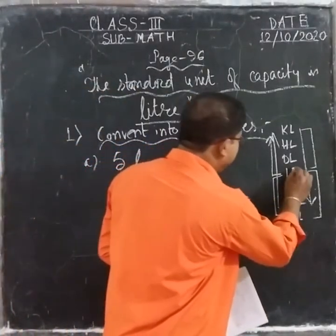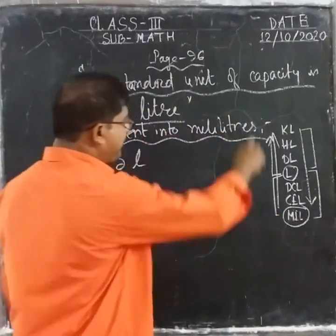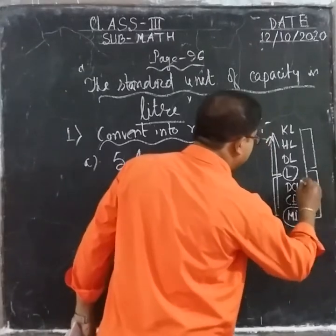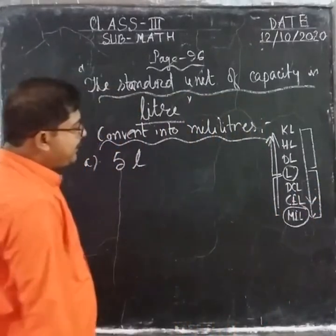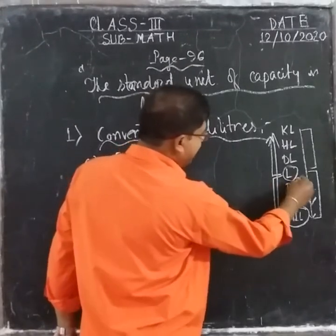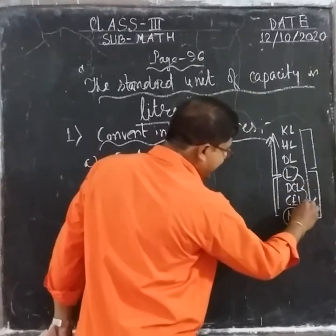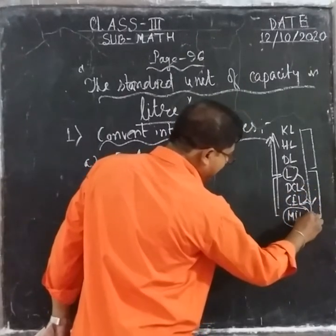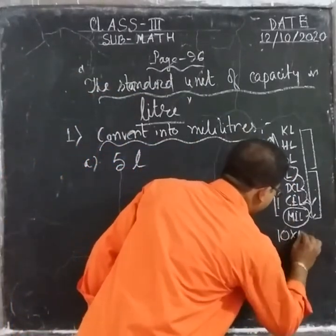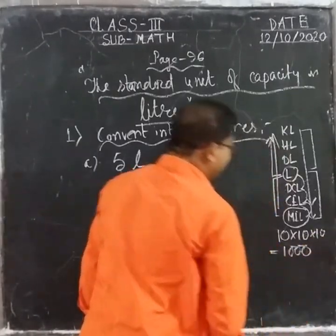You have to convert liter into milliliter, that means you have to come down. Whenever you move down, you multiply by 10 each step. From liter to deciliter is one place, to centiliter is two places, and to milliliter is three places. That means 10 × 10 × 10 equals one thousand.